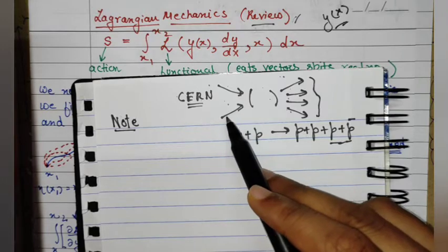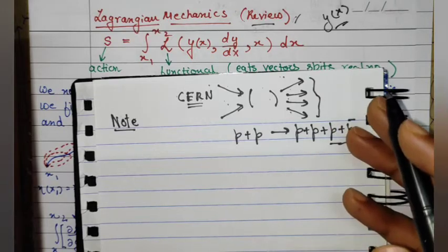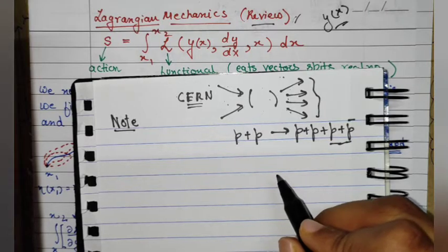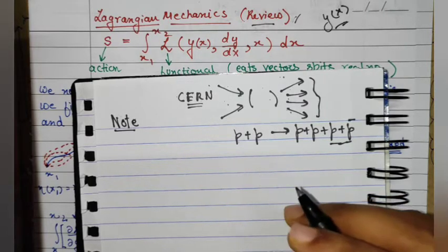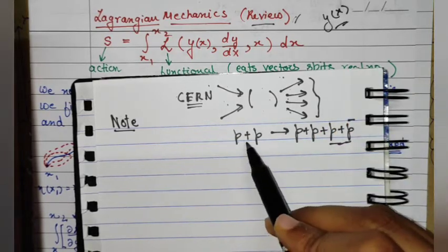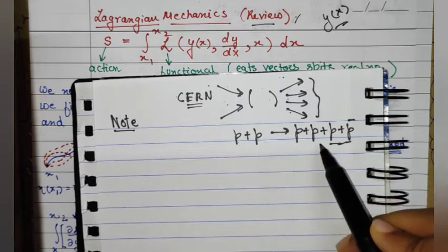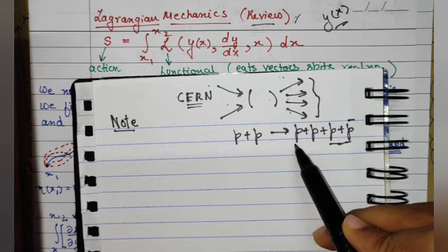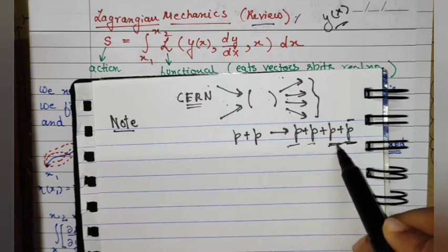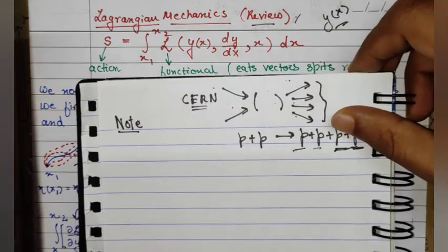For that, it is necessary to use the formalisms of quantum field theory, which also provides a basic understanding of how particles are created from vacuum when nothing is there. For example, in proton-proton collisions, we can end up with the original two protons plus a proton–antiproton pair created out of vacuum. We need a framework to deal with such interactions.